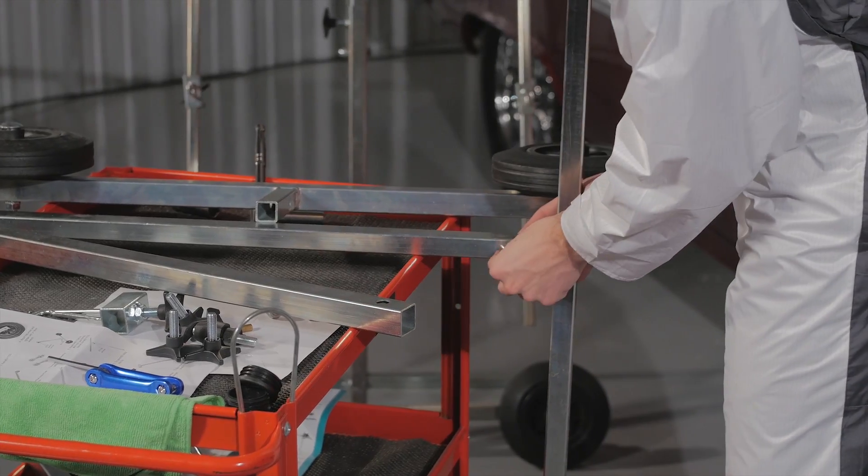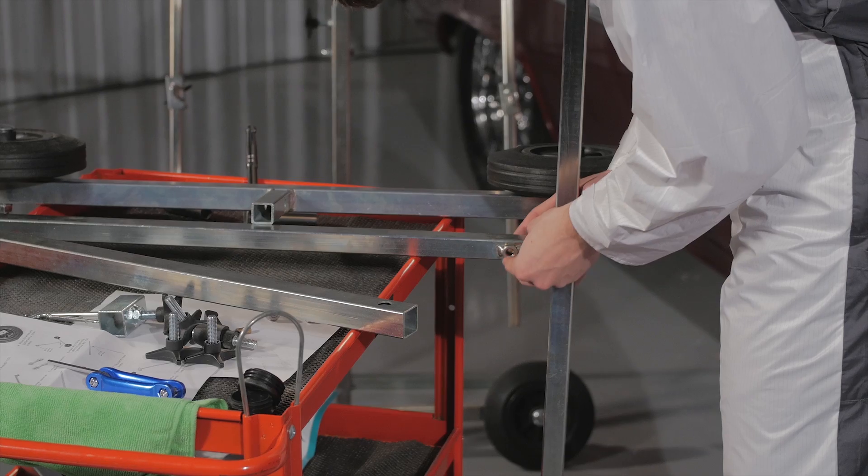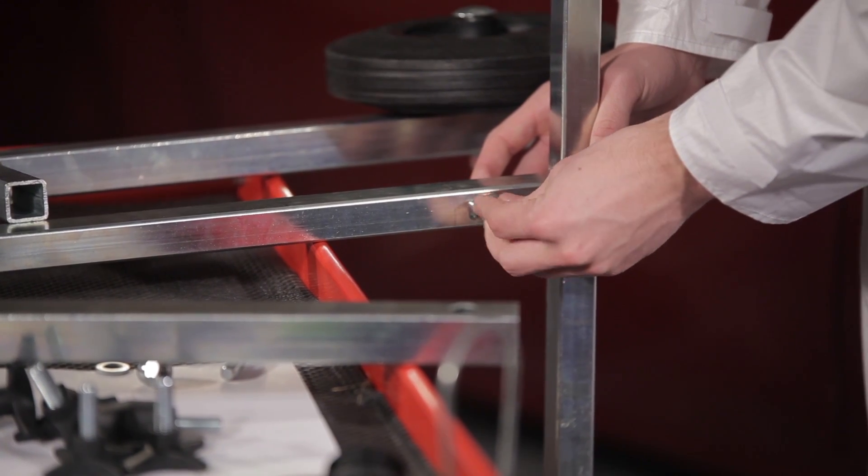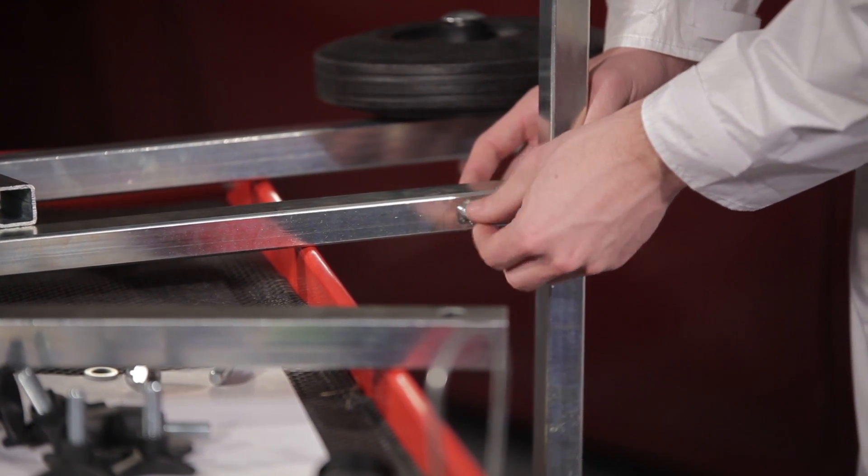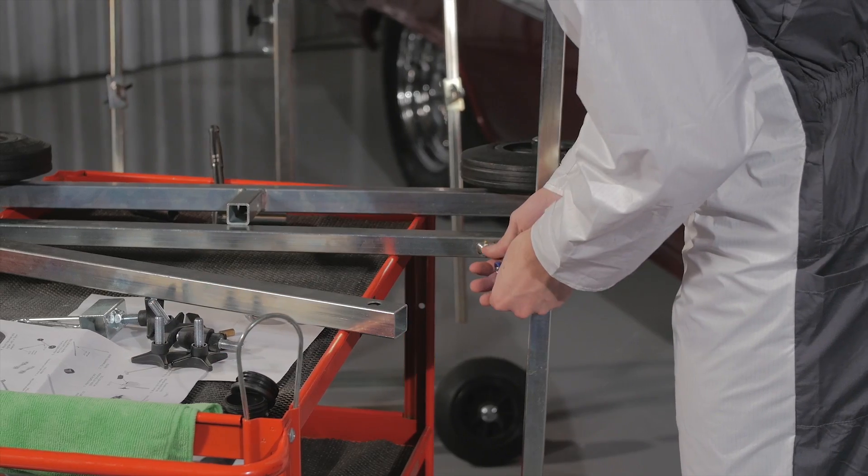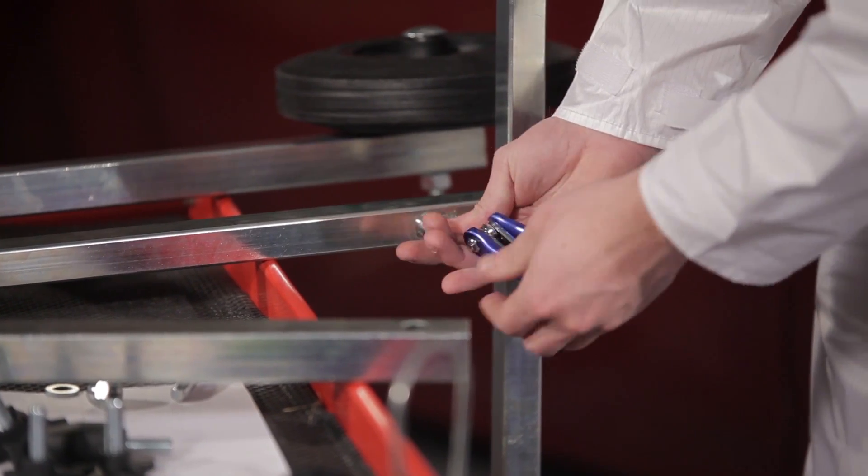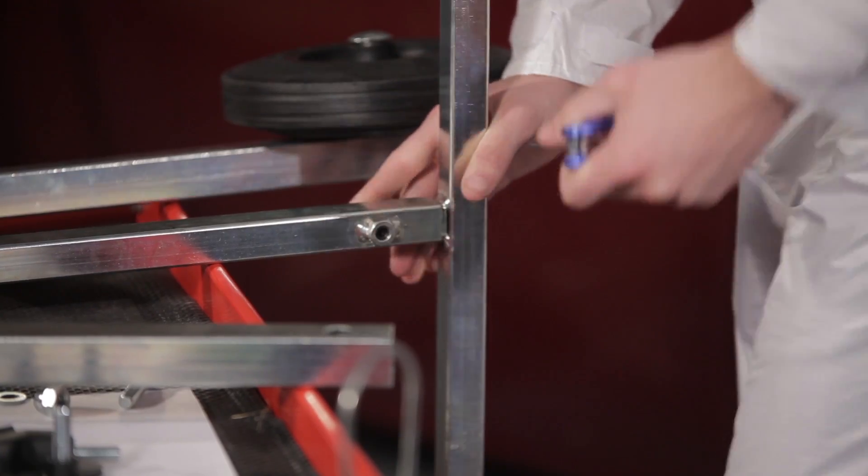Next, attach the kickstand by slotting the T-bracket into the back leg and lining up the bolt holes. Place a washer on the bolt through the aligned holes. Then place the other washer and nut on the end of the bolt that has passed through the front leg of the bracket and back leg. Tighten the nut onto the bolt until snug.